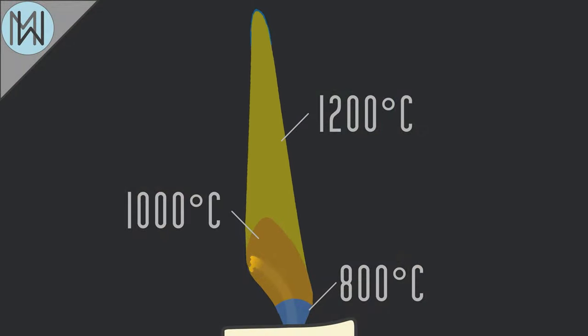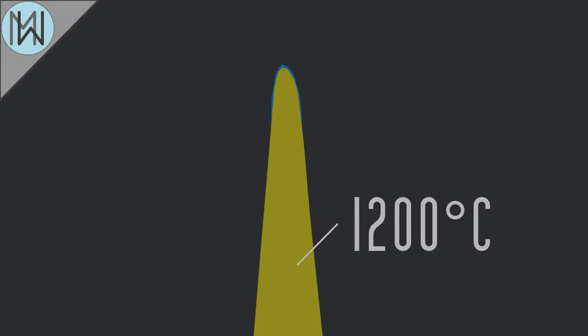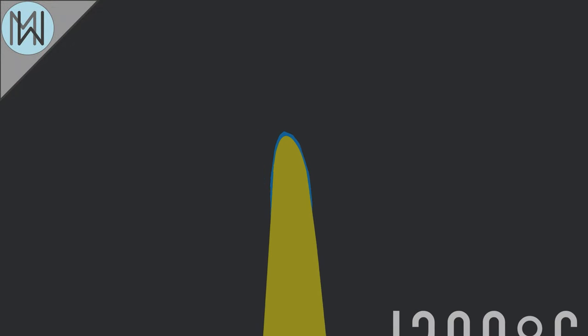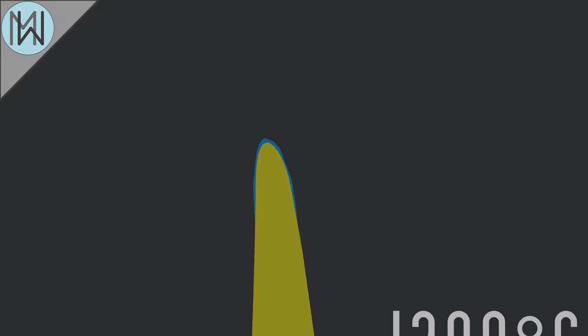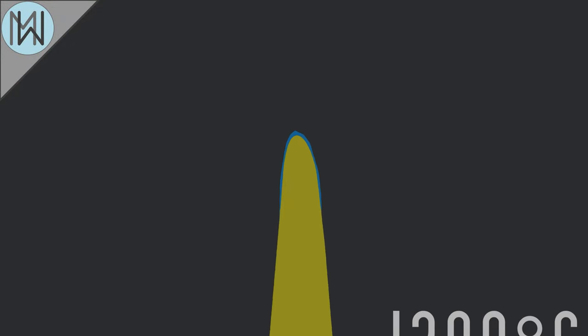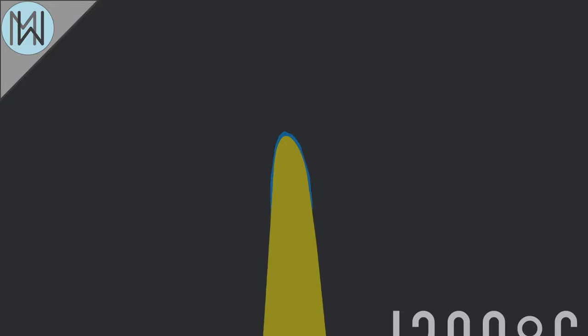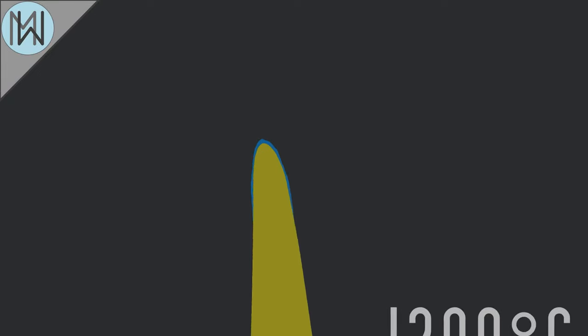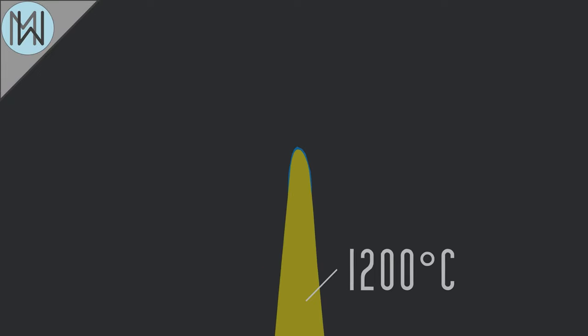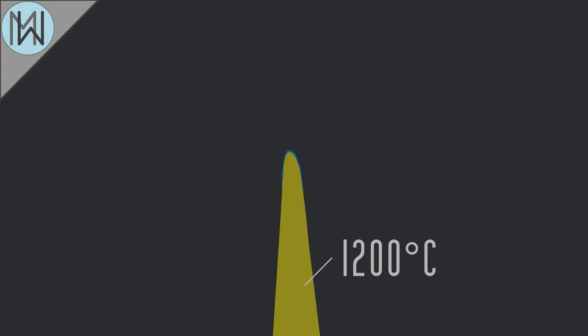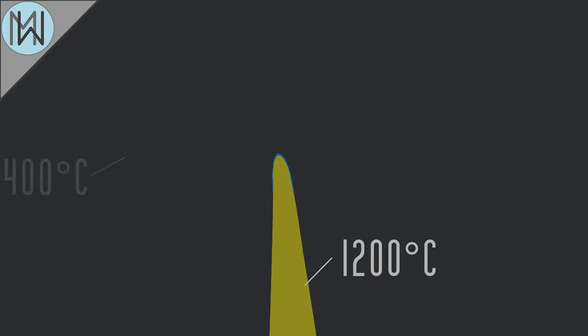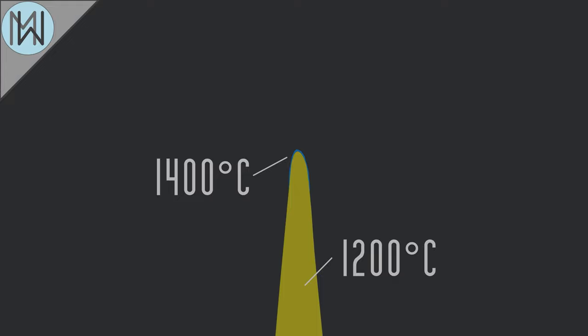The last region is at the very perimeter of the flame, and is a faint blue colour. Here, as the flame borders the oxygen-rich surrounding air, temperatures peak at around 1400 degrees C.